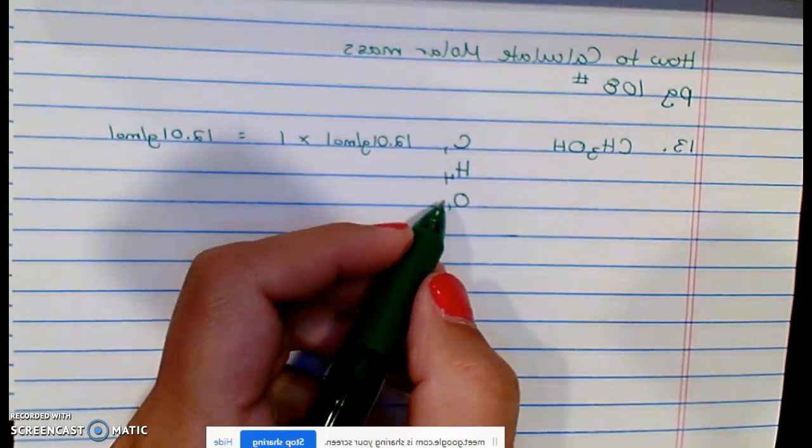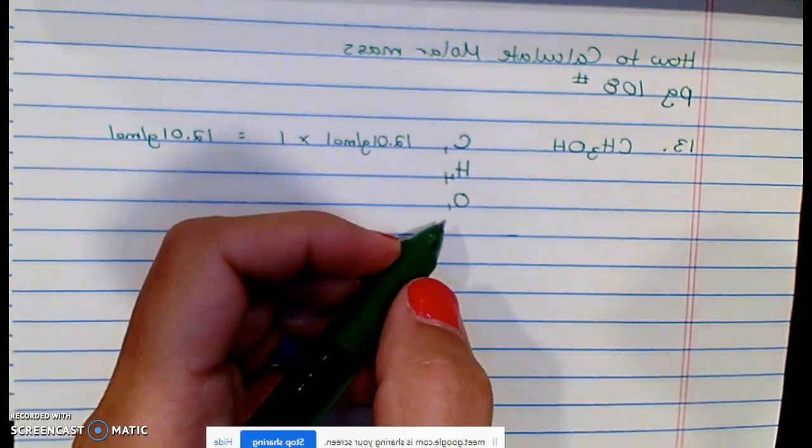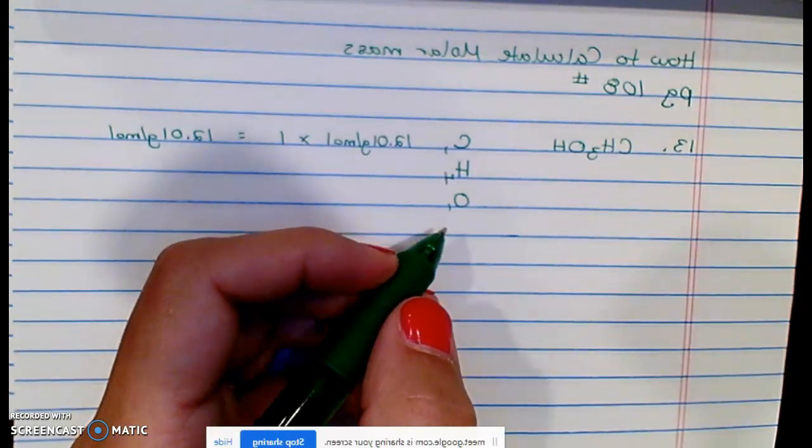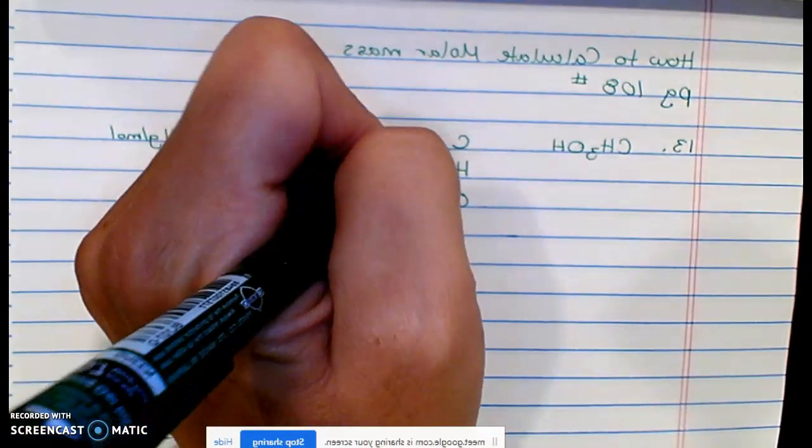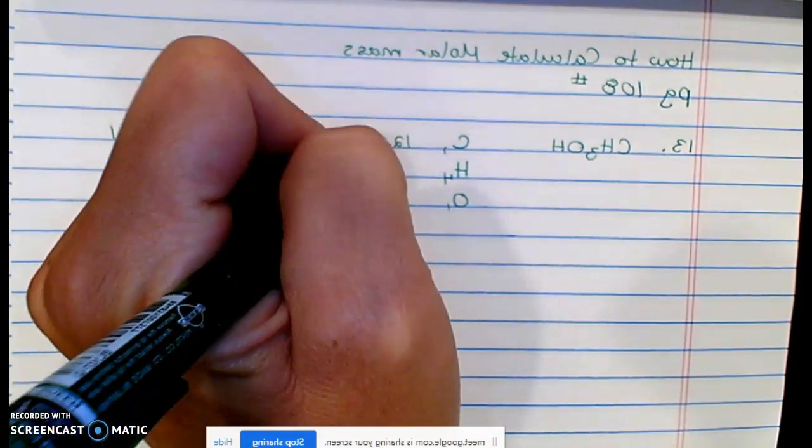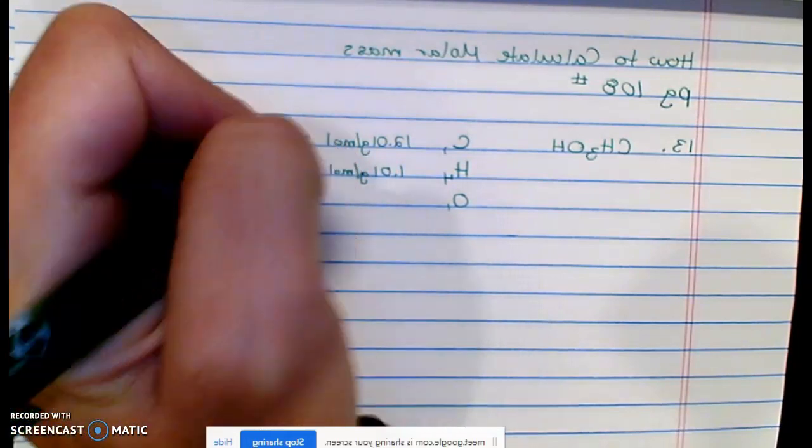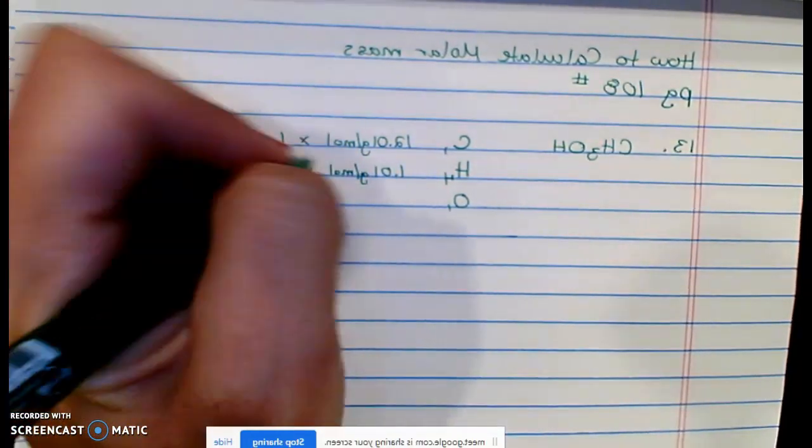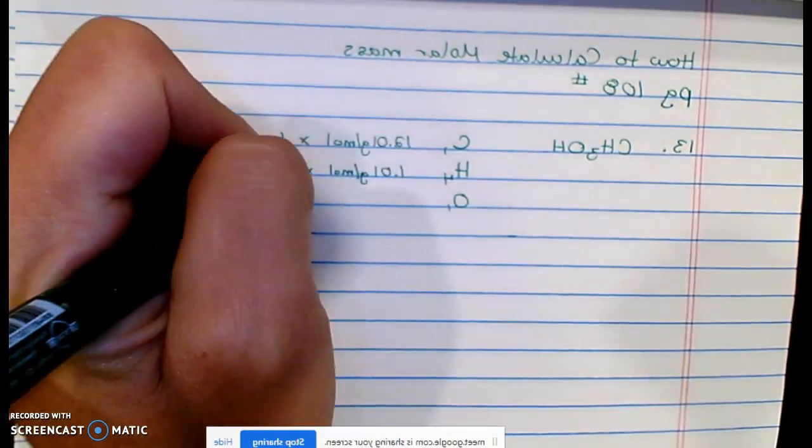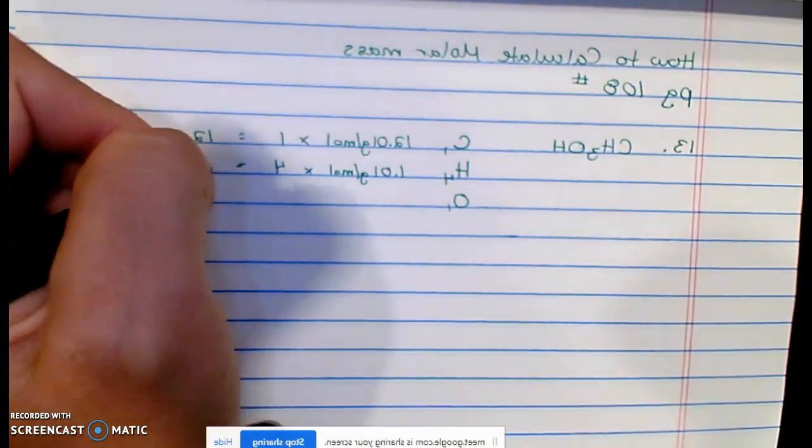What's the molar mass of hydrogen? I don't know. Ask the periodic table. Excuse me, periodic table. What's the molar mass of hydrogen? Oh, well, you see, it's 1.01 grams per mole. Okay, times four.